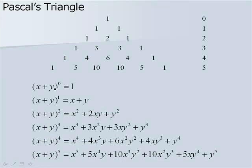Here we see Pascal's triangle and our expansions from our first slide. In row 1, where we had an exponent of 1, the coefficients are all 1's. Looking at row 4, we have 1, 4, 6, 4, and 1 as our coefficients, and you can see that here we have 1, 4, 6, 4, and 1. Notice that we start with x to the 4th and the exponent on x consecutively goes down by 1: x to the 3rd, x squared, x, and then no x in our last term. For y, we have no y in the first term, then y in the second term, increasing the exponent by 1 each time until we get to y to the 4th. Also notice that the sum of the exponents in each term should be 4: 4, then 3 plus 1 is 4, 2 plus 2 is 4, 1 plus 3 is 4, and then 4.